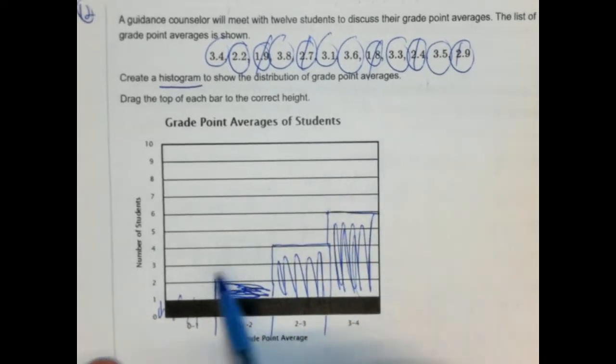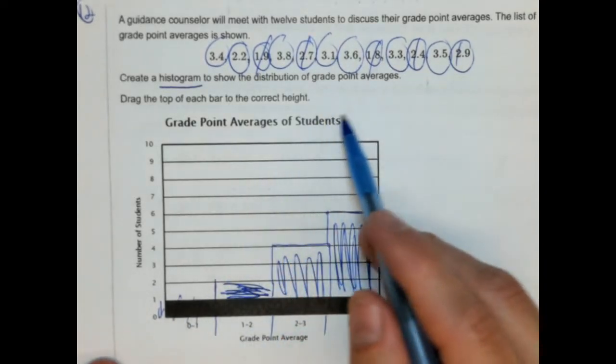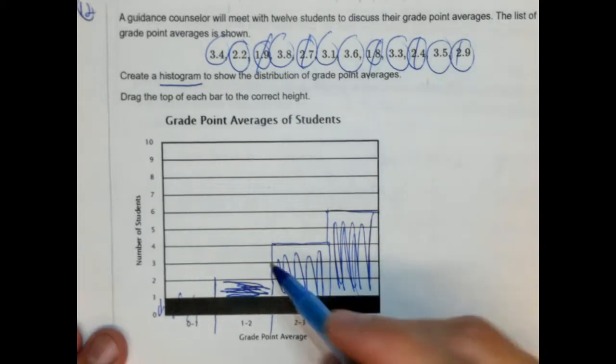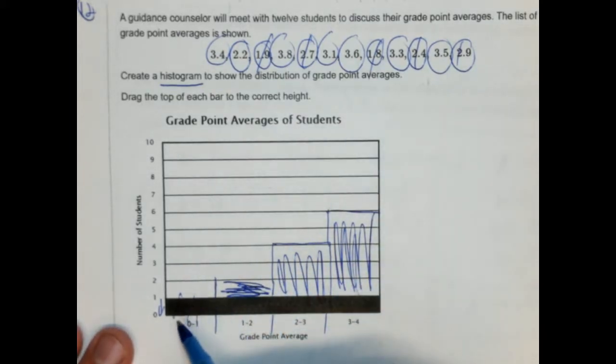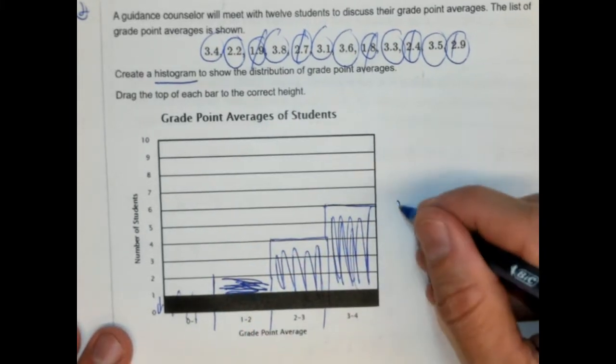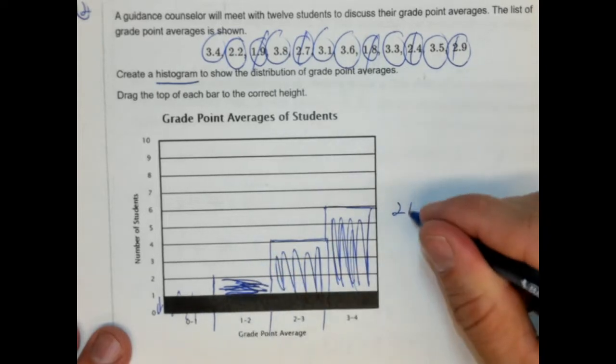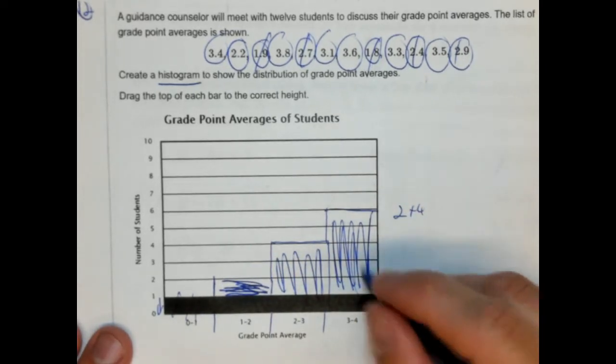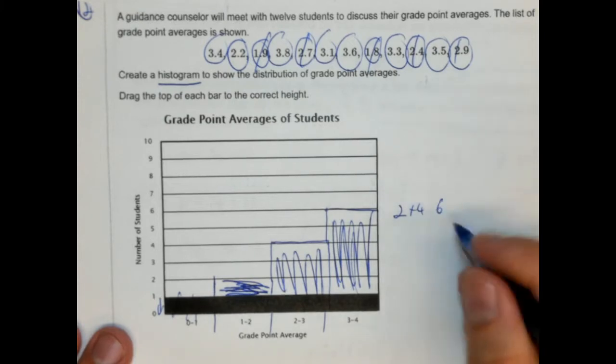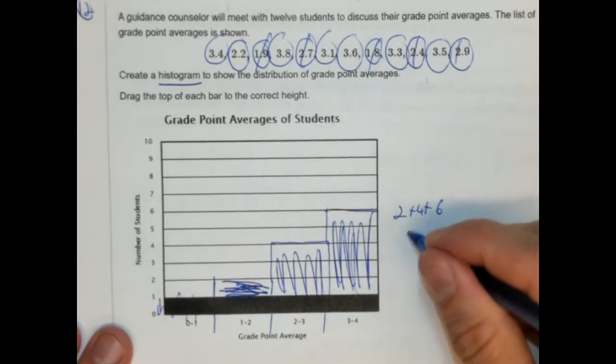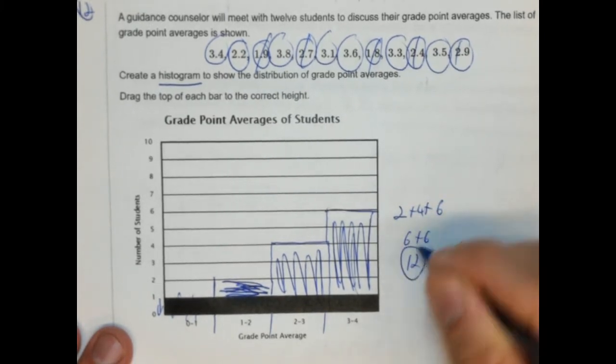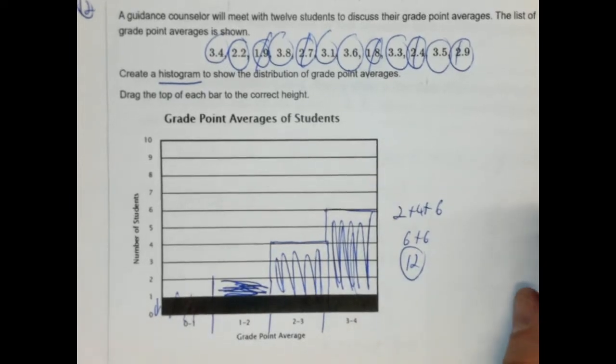Key things here when you're looking over this problem is make sure you drag this down and make sure your total number for students should be 12. So we should add this up and it should all add up to 12. So zero plus two plus four plus six. Two plus four is six, six plus six is 12. Yep. We got 12 just to make sure we didn't miss any of them. All right, cool.